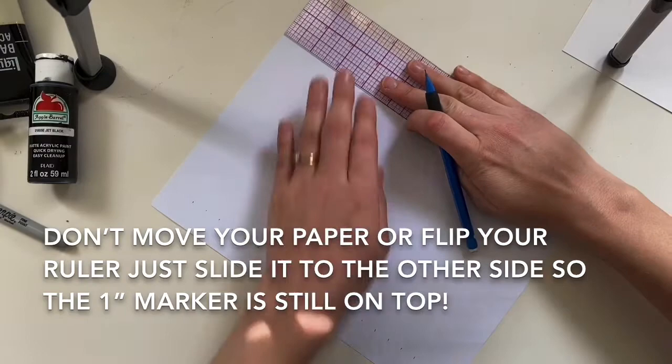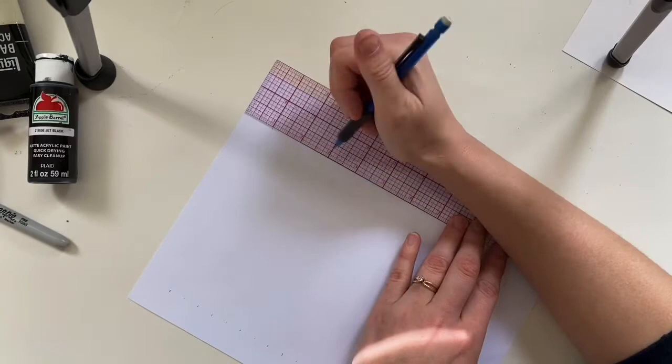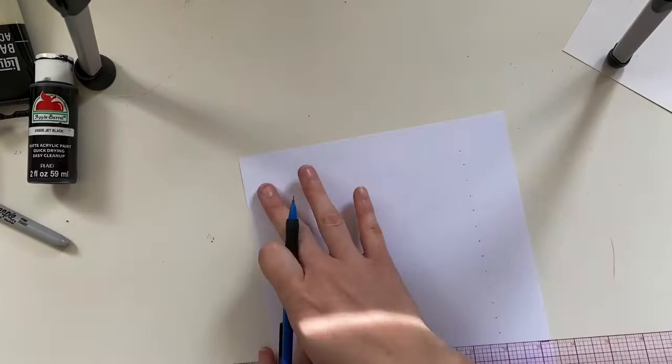Alright, we are not going to move our paper or our ruler. Don't flip anything around, just move your ruler to the other side of the paper and you're going to do the exact same thing. So a mark at one and every half inch going all the way down.